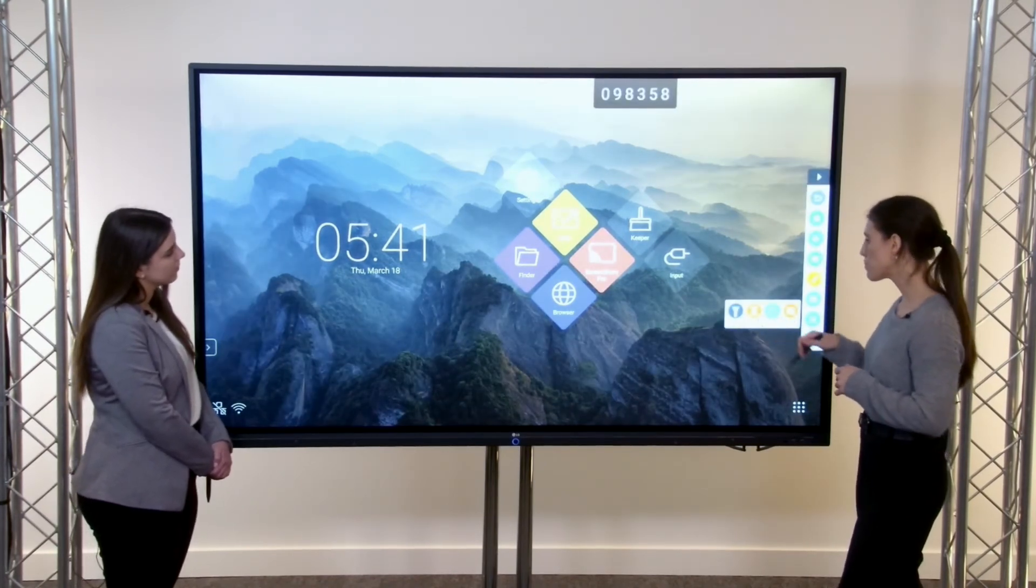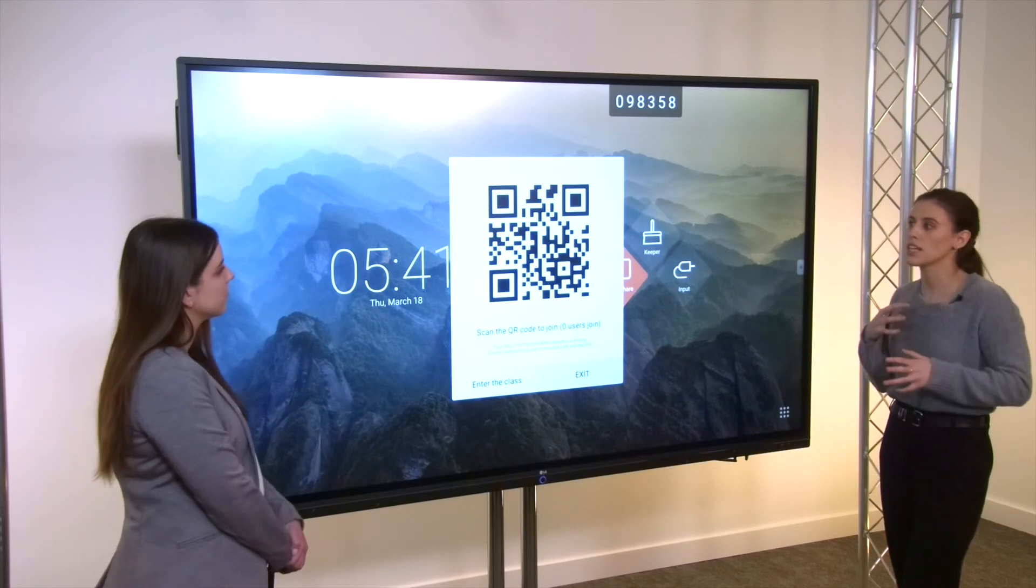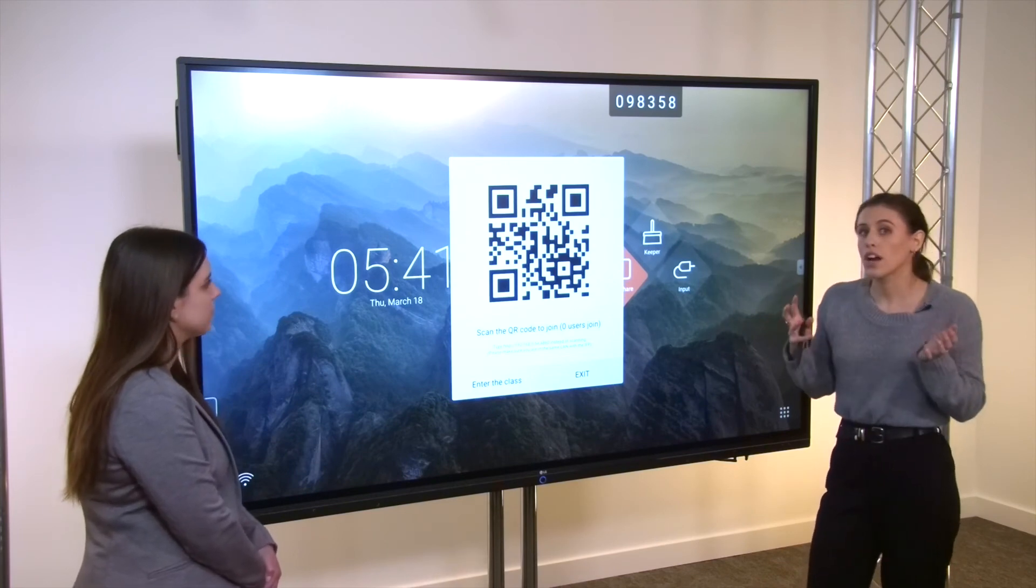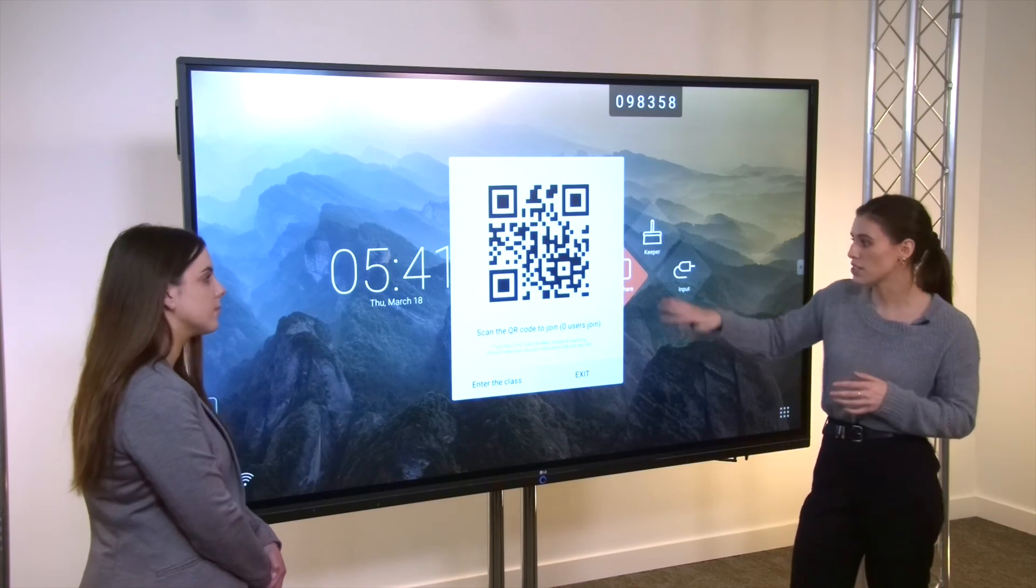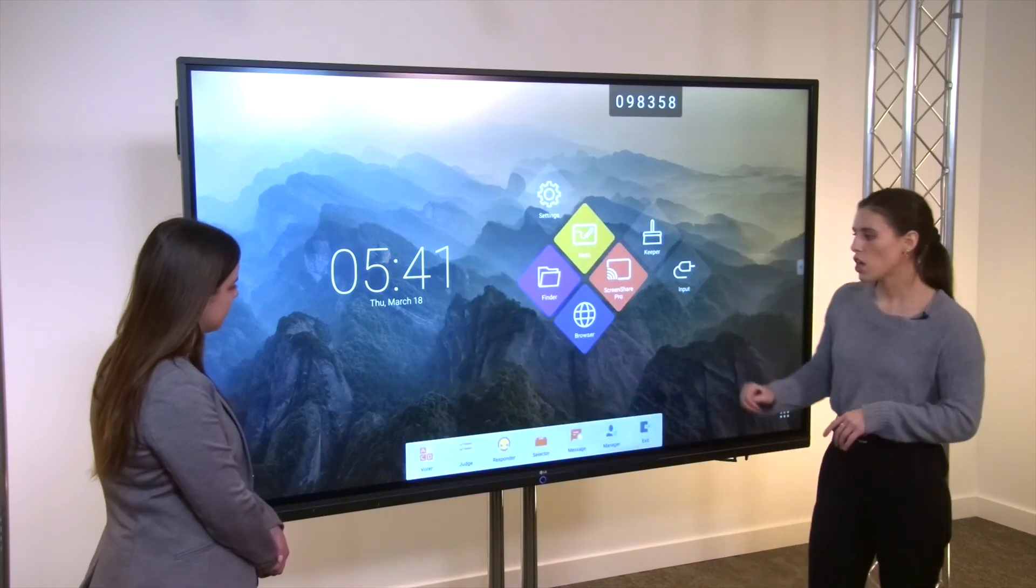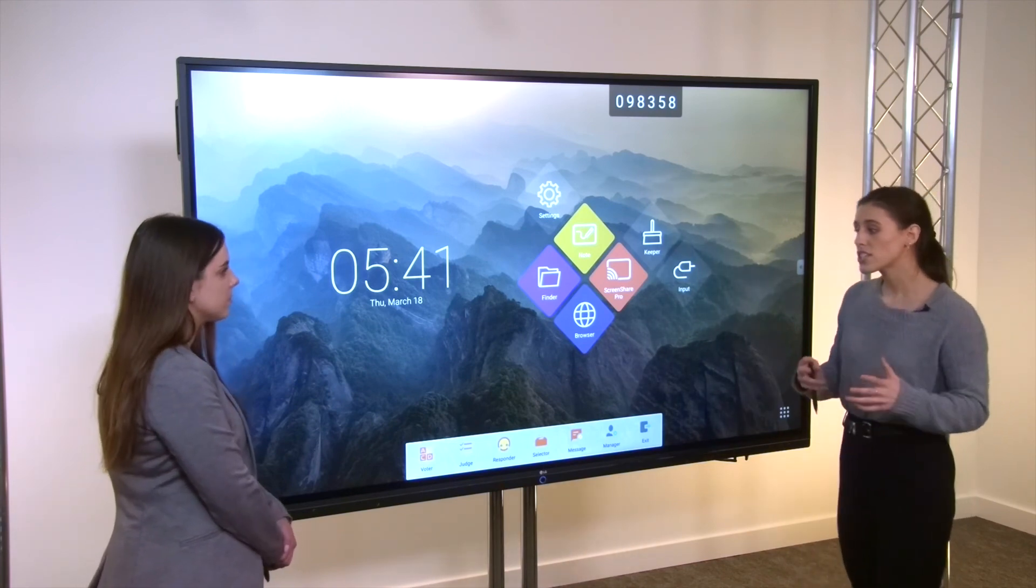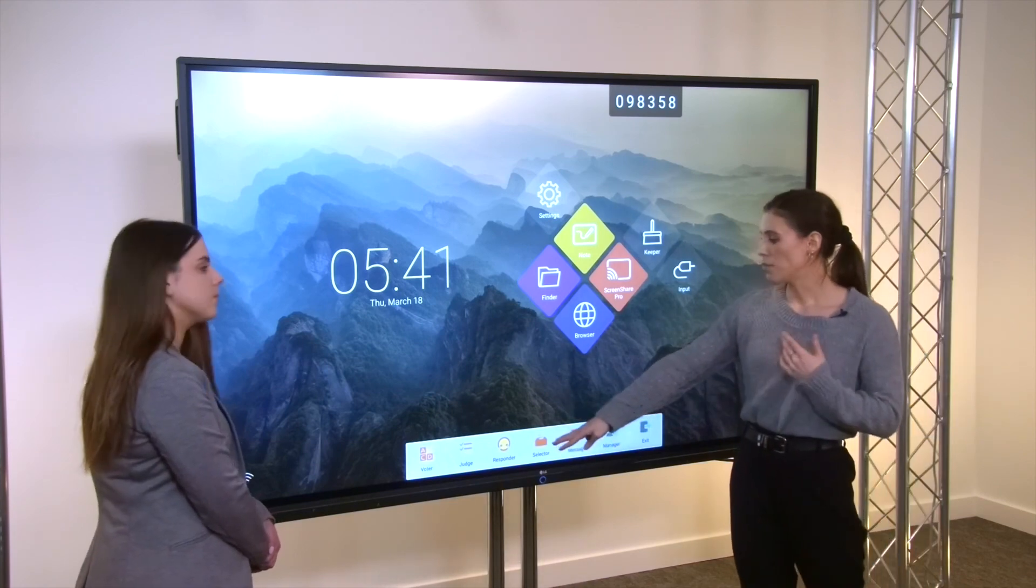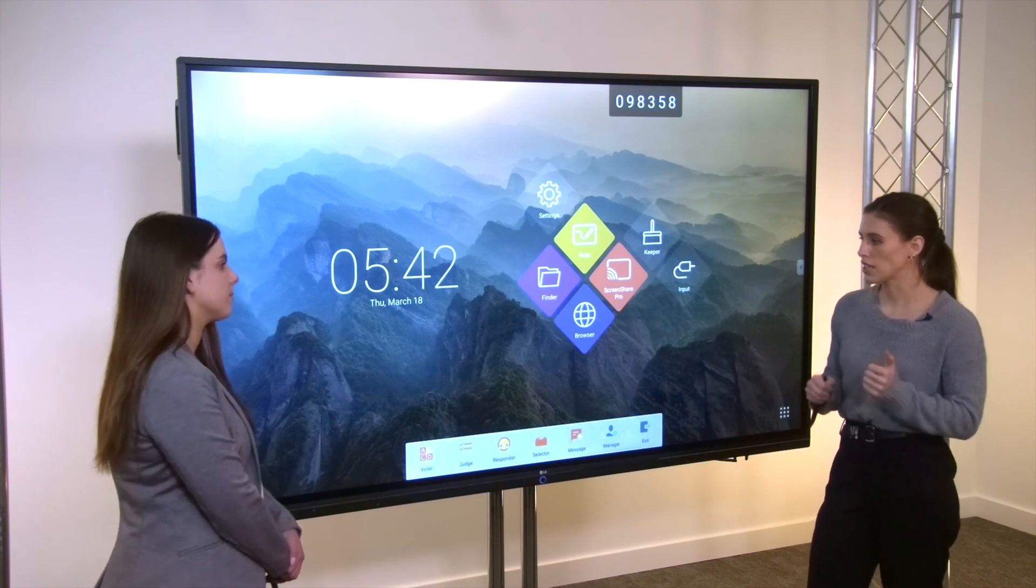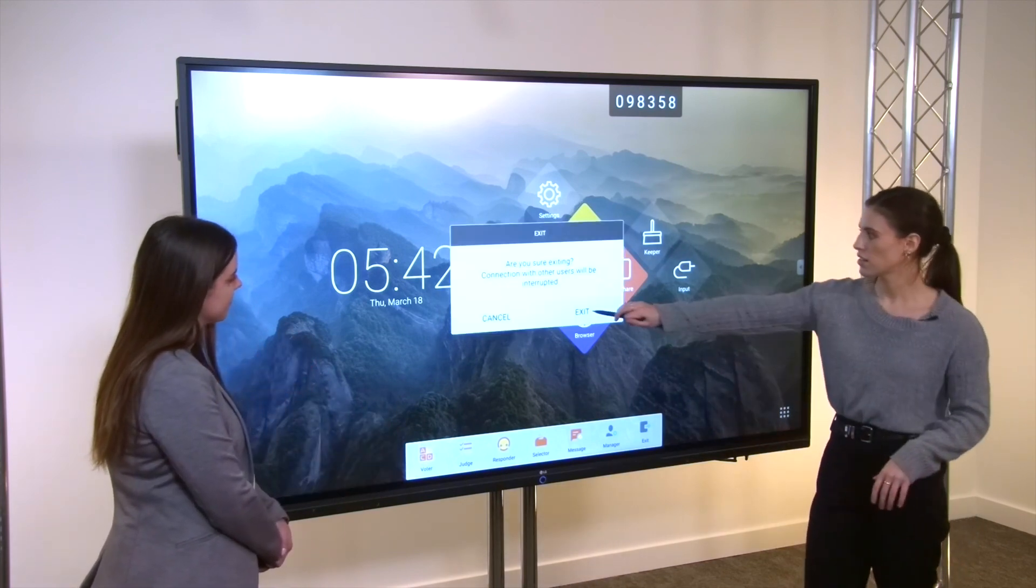And then we also have some timer tools like Countdown and Stopwatch. And then of course we have AirClass. So this is super helpful to get your students engaged in class. They can scan this QR code through their tablet or their phone and join in. Even if you're in a Zoom class, if you're a remote student, you can still scan this code and join in remotely, which is a super cool feature. So we can enter the class. And down below we have some options here. So we have voter, judge, responder, selector, and message. And this just allows you to quiz your students. You can do a random selection of students. You can do true, false. You can message your students. There's a lot of different options here for collaborating. I love that remote students can join too. That makes learning super accessible.